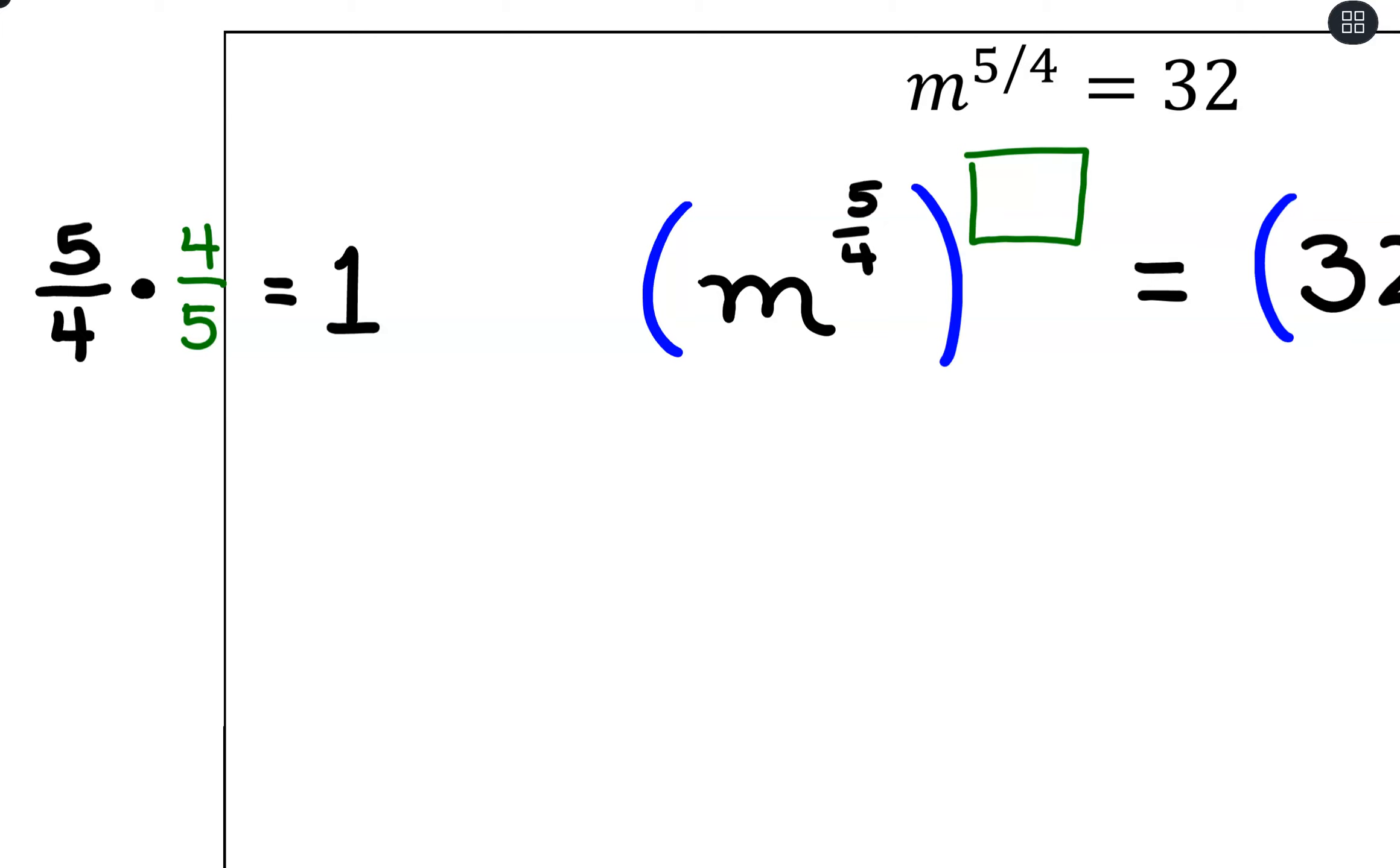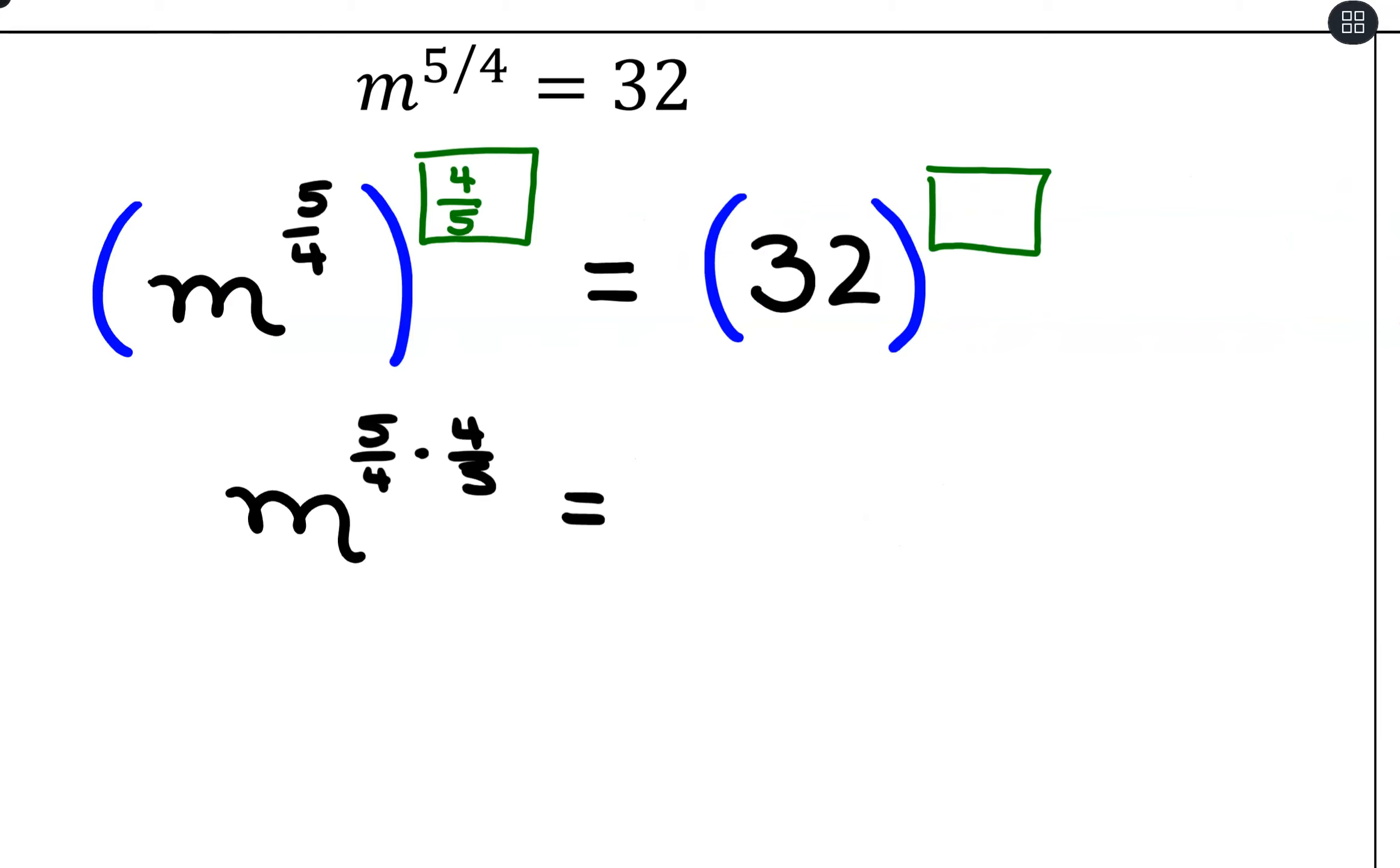So what I'm going to do here is where I have m to the 5 fourths, I want to raise that to an exponent of 4 fifths using the reciprocal. So when I use that power to a power rule, that's really just m to the 5 fourths times 4 fifths. Then on the other side of the equation, we have to raise it to the same exponent, 4 fifths. So we're taking the 5th root of 32 and we're going to raise that to the 4th power.